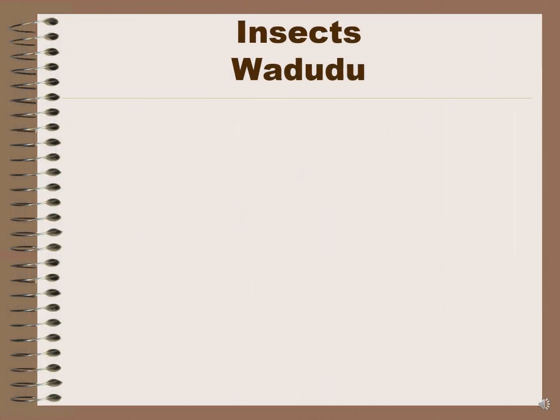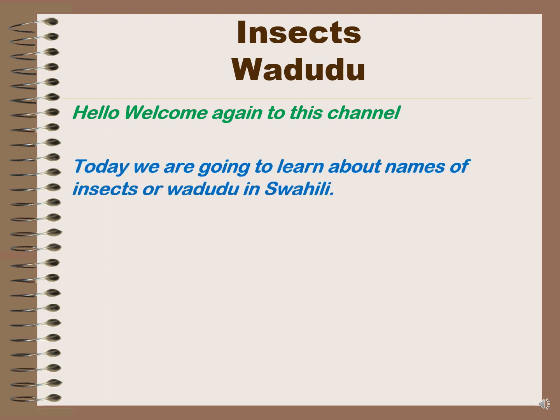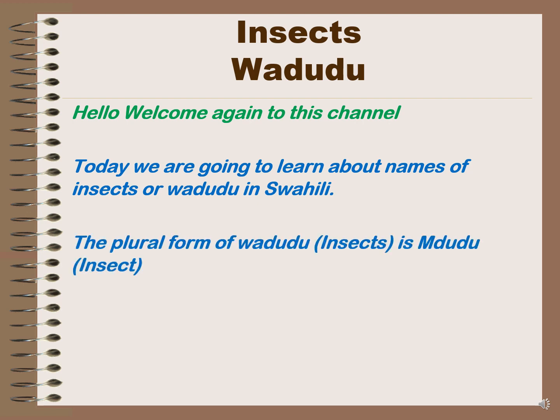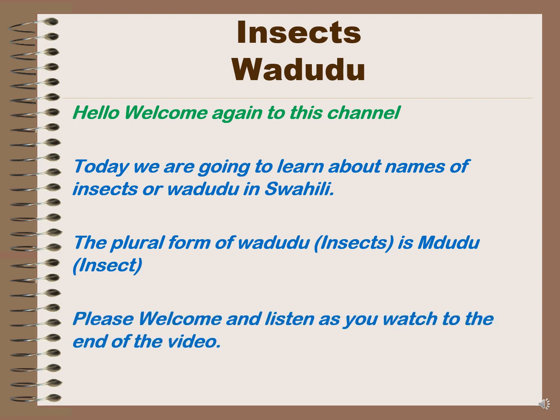Insects, or 'wadudu' in Swahili, is our today's topic. Welcome again to this channel — today we are going to learn about names of insects or wadudu in Swahili. The plural form of insect is 'wadudu' and the singular form is 'mdudu'. Please watch to the end of the video.